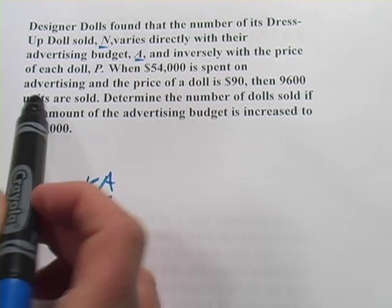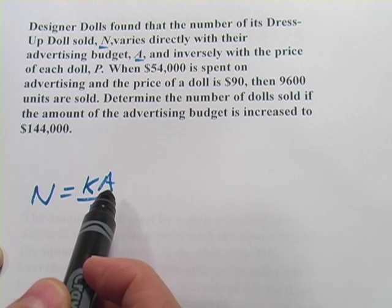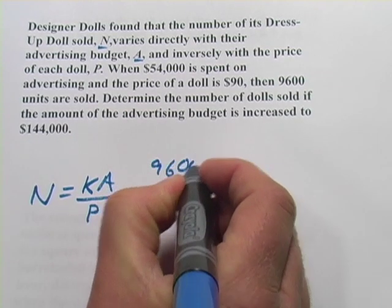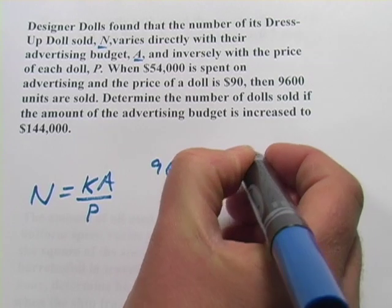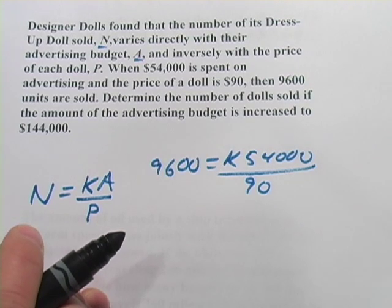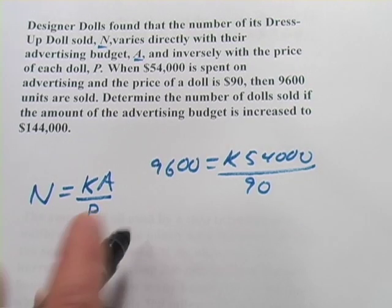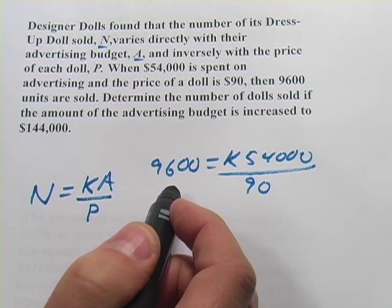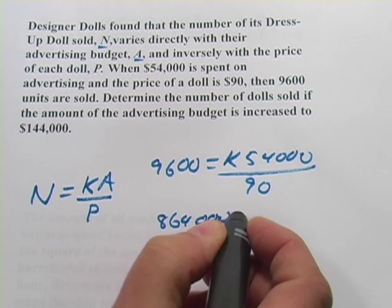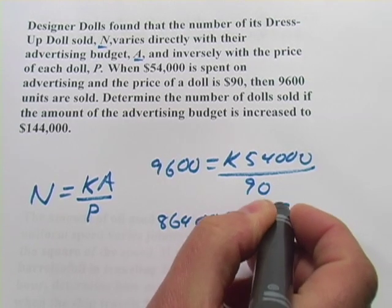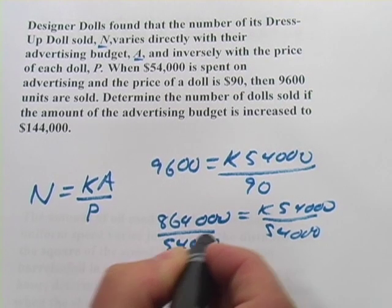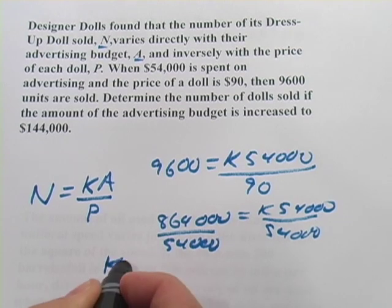Now it says, when $54,000 is spent on advertising, and the price of each doll is 90, then 9,600 units are sold. So let's plug that in. We'd have 9,600 units. We have our K. The advertising budget is $54,000. And the price of the doll is 90. So let's chug out the math on that. 9,600 times 90 is $864,000. And then you'd want to divide that by $54,000. And that actually comes out to 16. So K equals 16.